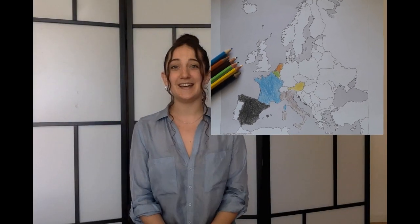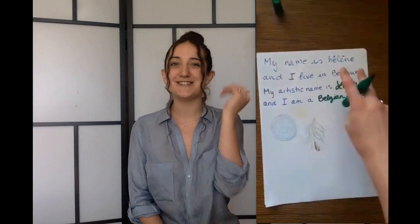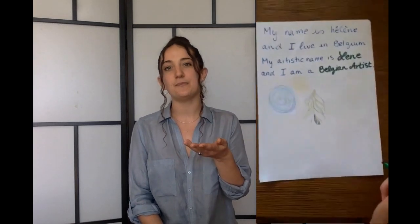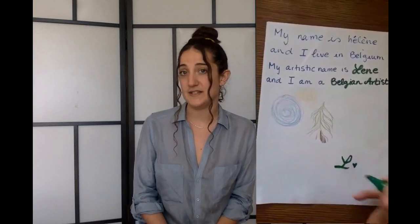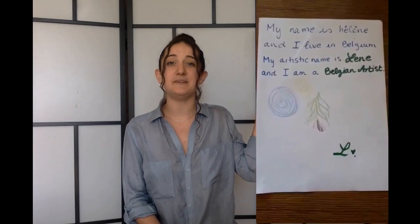This is what your map should look like at the end of the exercise. Colorful, right? Now it's your turn to become an artist. So let's turn the page and write our artistic name. I'll start and you can follow my lead. My name is Helen and I live in Belgium, but my artistic name is Lee, and I am a Belgian artist. Here's one of my favourite art pieces. And of course, don't forget your artist's signature. I'll leave you to it. Bye and hope to see you soon, art lovers!